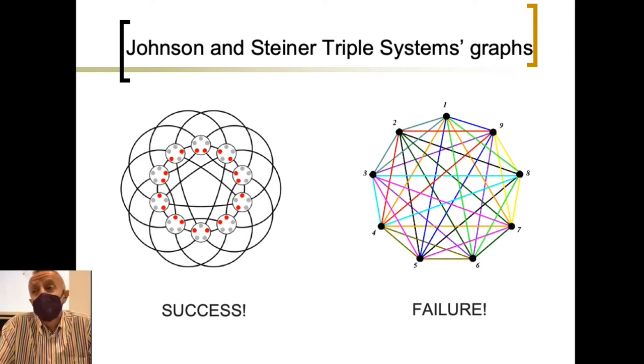So, the polynomial characteristic is able to identify properly the Johnson graphs in which, for example, McKay and Piperno takes exponential time. And, I said identify. And, the failure, I mean, the contrary fails with Steiner-Triple system graphs.